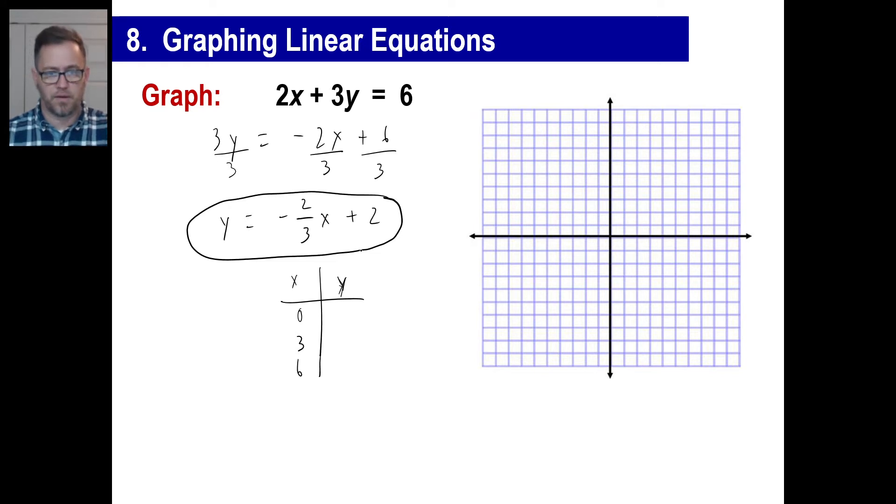I think it makes my stomach hurt thinking about that. Okay, so if x is 0, then negative 2/3 times 0 is 0 plus 2 is 2. So here's one of your points. 0 over and then 2 up, there's your first point. If x is 3, then negative 2/3 of 3 will just be negative 2, right? Plus 2, that'll be a 0. So your x is 3, 1, 2, 3, and then there we go.